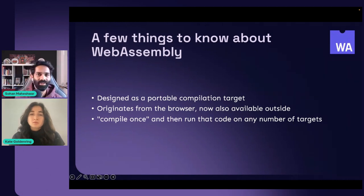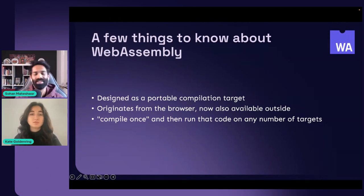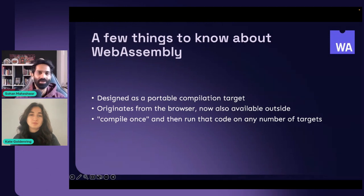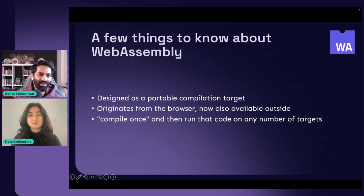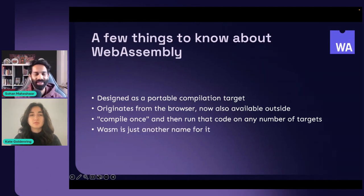Those targets could be different architectures like ARM or Intel, different OSes like Windows, Mac, or Linux, or things like Kubernetes and cloud platforms. The idea really was: compile it once and run that code anywhere. You might hear me refer to this as WASM — it is just another name for it, so WebAssembly and WASM refer to essentially the same thing.